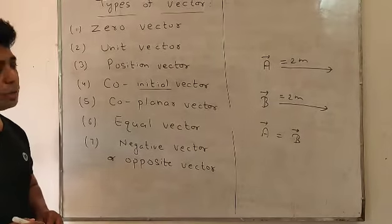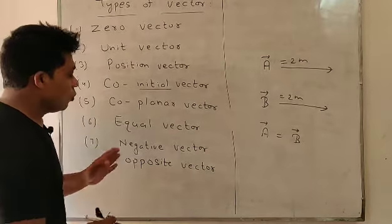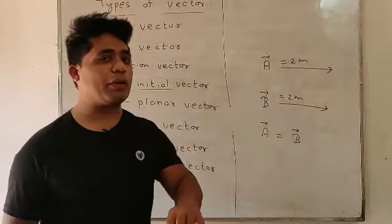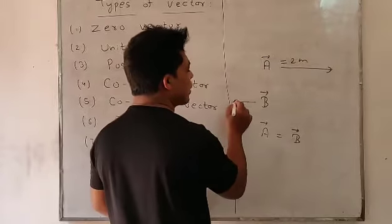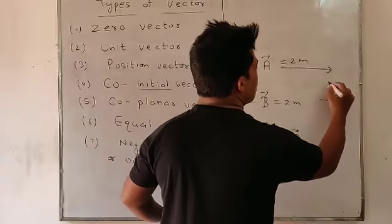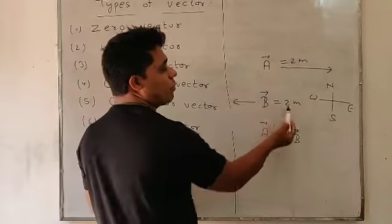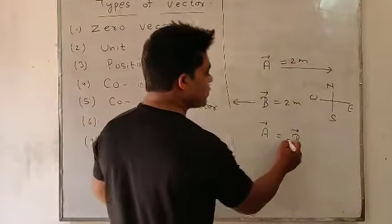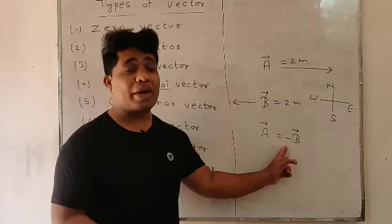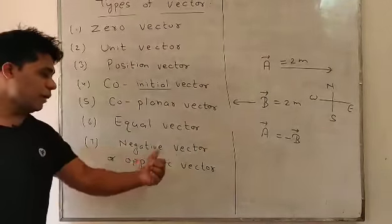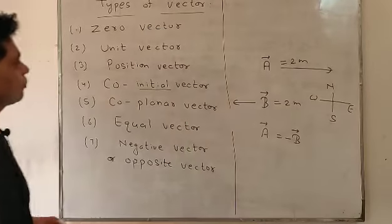Finally, negative or opposite vector refers to those vector quantities that have equal magnitude but opposite direction. For example, if vector A has magnitude 2 meters pointing north, and vector B has magnitude 2 meters pointing south — same magnitude but different direction — then it is said to be a negative vector, represented as A equals minus B. The minus sign indicates that the direction is opposite. Such vectors are called negative or opposite vectors. These are the basic types of vectors.